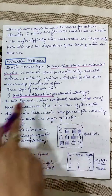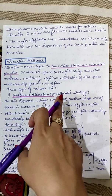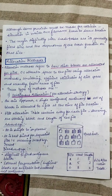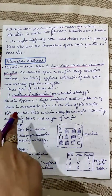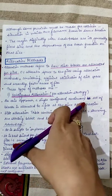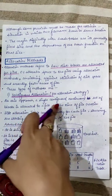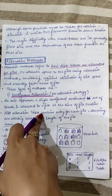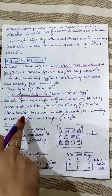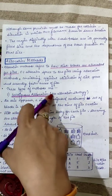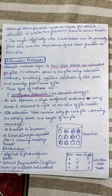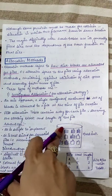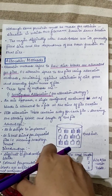The first method is contiguous allocation, also referred to as a pre-allocation strategy. When we discussed memory management techniques, we studied contiguous allocation where a single contiguous block is required. In this approach, a file needs a single contiguous or continuous set of blocks allocated at the time of file creation. The file allocation table contains an entry for each file showing the starting block and the length of the file.